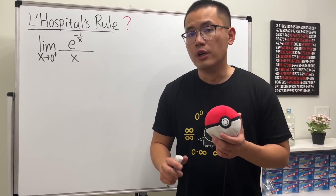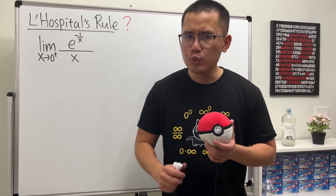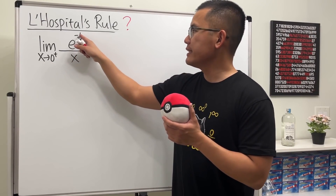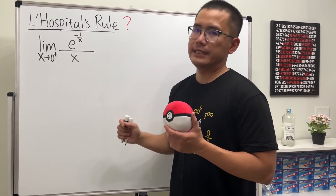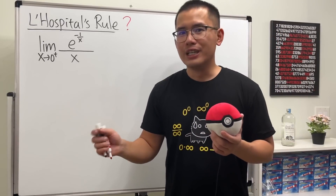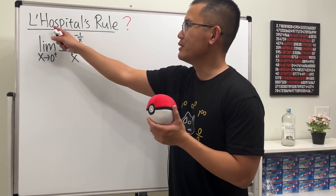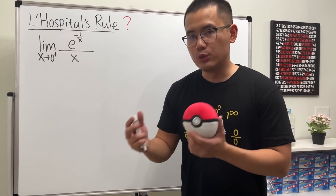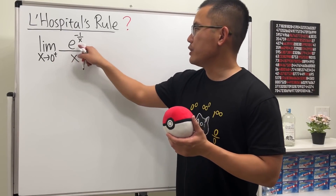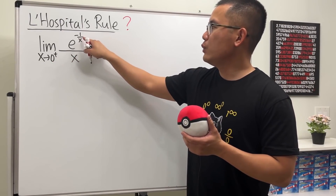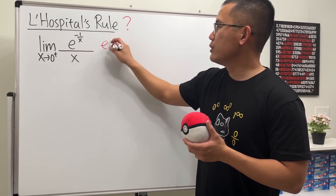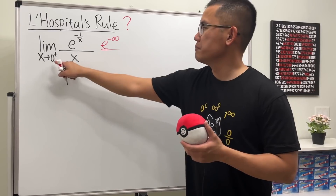Suppose we want to use L'Hôpital's rule to evaluate the limit as x approaching 0 plus of e to the negative 1 over x power over x. First, let's verify that we can actually use L'Hôpital's rule, because in order for this to work, we must have 0 over 0 or infinity over infinity. When we put 0 plus in, we get negative 1 over 0 plus, which is negative infinity. So we get e to the negative infinity over 0 plus.